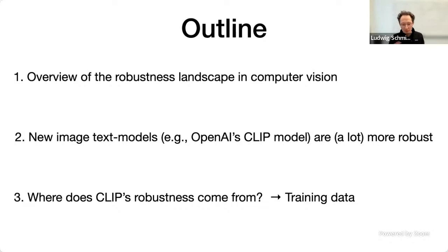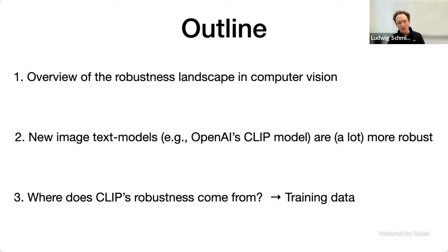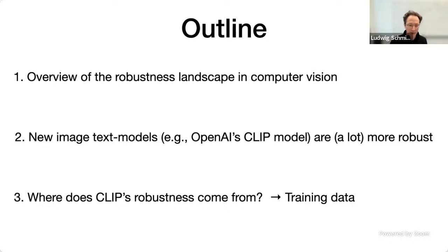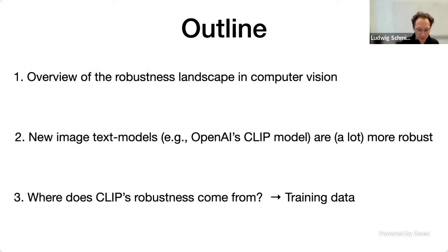I really like it when these talks are interactive. At the end of each section, I'll do a brief pause. If you have any questions, there's a Discord chat — send them there and hopefully we can forward them to me. We'll have a discussion at the end. Let's dive into the first part: the overview of the robustness landscape in computer vision.